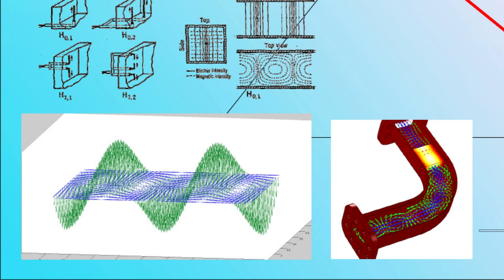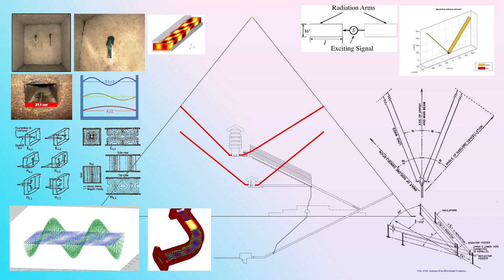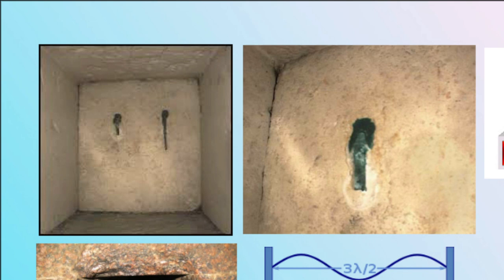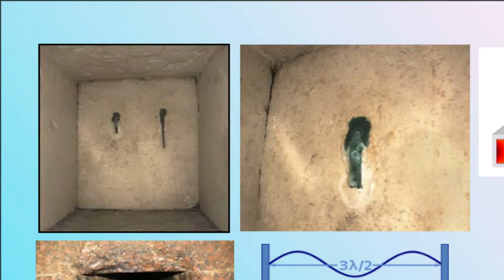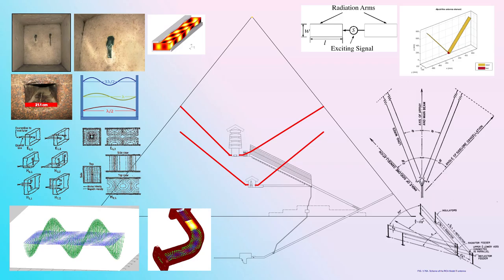Waveguides transmit the information collected from radio dishes into analyzing equipment. We also use them in microwaves to transmit the magnetic field. Interestingly, at the end of the Queen's Chamber waveguides there are two copper pins sticking out of the wall, bent downwards. The only explanation is that they are used to create waves for the waveguide — a textbook example of coaxial pins used to generate a specific wave mode down a waveguide.